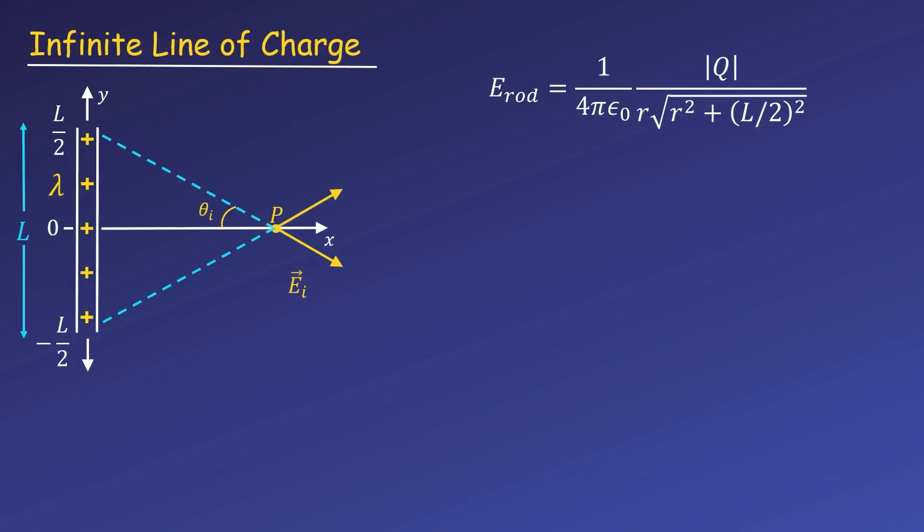Now we can briefly look at an infinite line of charge. We have already solved for the field, so we don't need to integrate again. We're just changing the size of l. Specifically, we're taking the limit as l tends to infinity. As you may remember from calculus, you often need to rewrite your function before you can get a sensible answer for a limit. I'll show an extra step, since this can be confusing. To do this, we're going to factor out l over 2 squared from the radical.